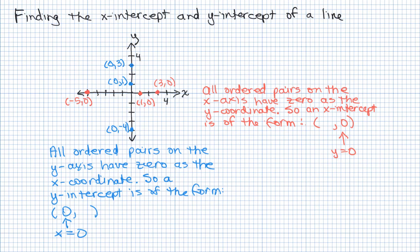So an x-intercept is of the form, well, there's some number in here for x, but then the y-coordinate will be 0.